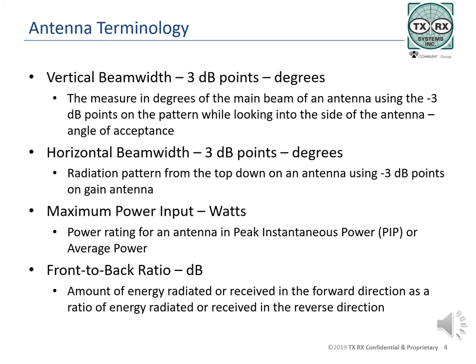The front-to-back ratio of an antenna is the ratio of the amount of energy radiated or received in the main or forward direction compared to the energy radiated or received in the opposite direction. Nearly all directional antennas will have a forward and a reverse lobe, and the system engineer must be aware of any signals coming into the back of the antenna.